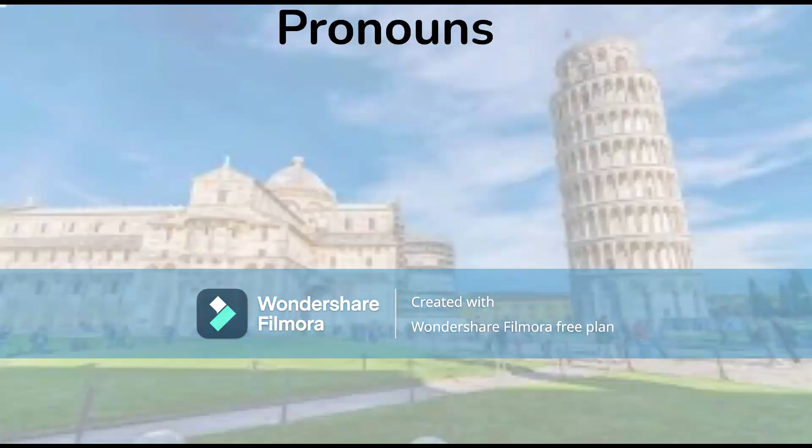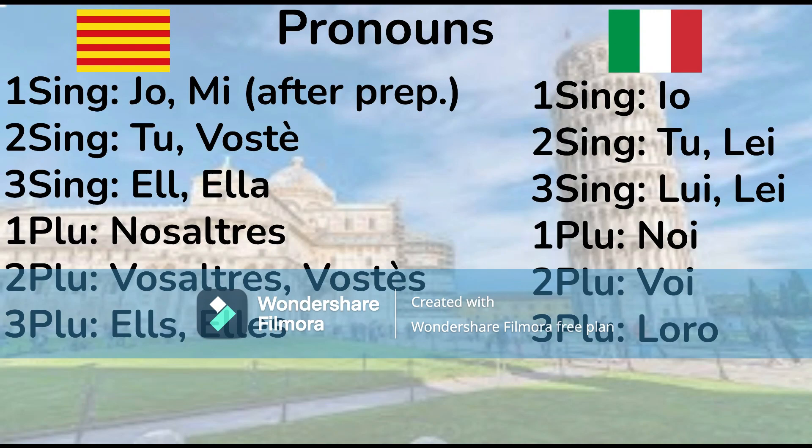Pronouns: most Catalan and Italian pronouns are quite similar to each other, although there are a few differences. For example, the third person singular: 'ell,' 'ella' in Catalan compared to 'lui,' 'lei' in Italian. Also in Catalan, 'vostè' denotes the second person singular formal pronoun, but it's 'Lei' with a capital L in Italian.